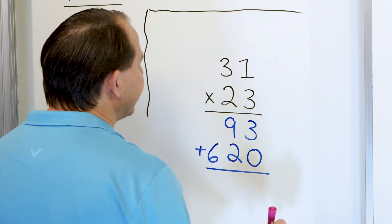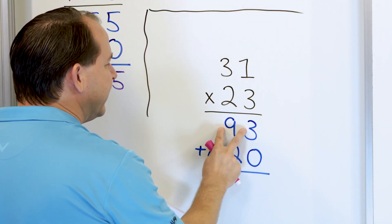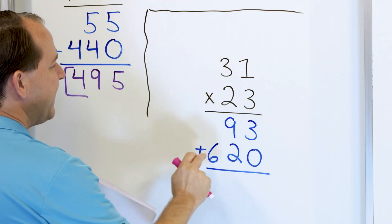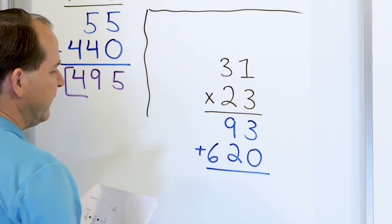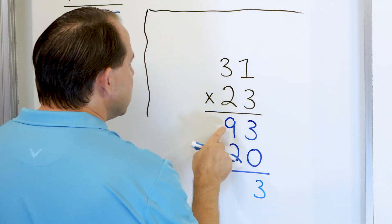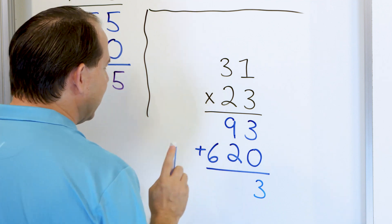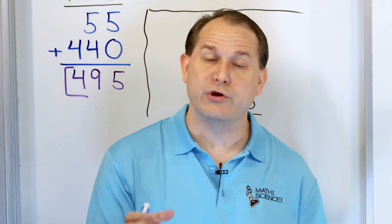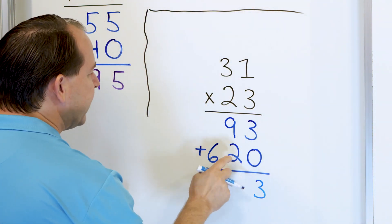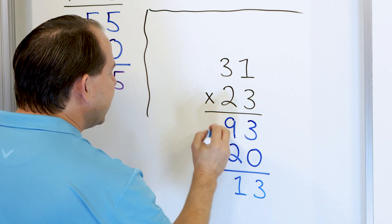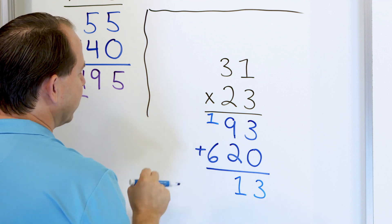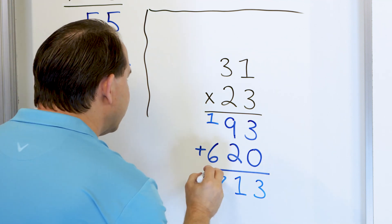Notice what you're really doing: you're finding out how much is 31 times 3 — that's 93 — and then figuring out what is 20 times 31, which is 620 because you put the 0 at the end of 62. So what do we get when we add? 3 plus 0 is 3. Then 9 plus 2 gives us 11 — so we put a 1 here and carry a 1 over. Then we have 6 plus 1, which is 7. So the answer is 713.